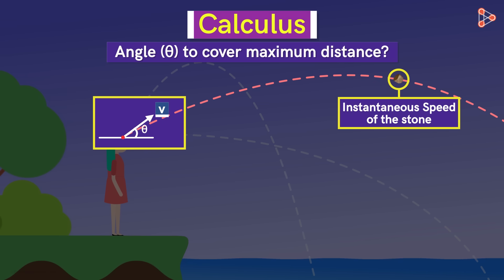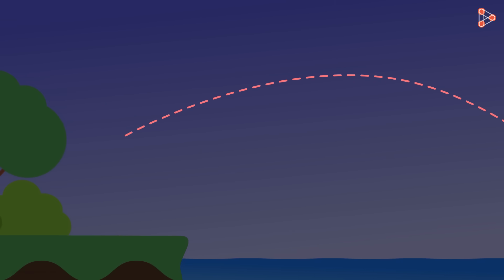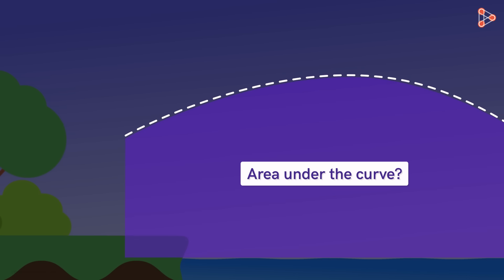But wait, let me ask you a completely random question. Look at this trajectory of the stone. What do you think will be this area under the dashed curved path? We know how to find the area of a simple shape like the rectangle. Its area is equal to its length times its width. But how do we get this formula?